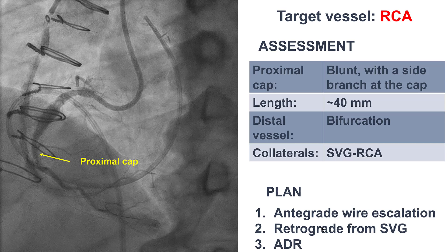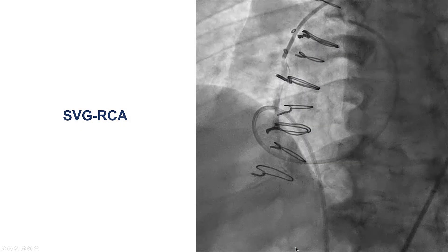The prognosis for the saphenous vein graft did not appear to be very promising. The mid-RCA was occluded with heavy calcification, and the PDA was filling through the saphenous vein graft to the right coronary artery. Our plan was to first try antegrade wire escalation; if that did not work, do retrograde from the vein graft; and if that did not work, do antegrade dissection re-entry.